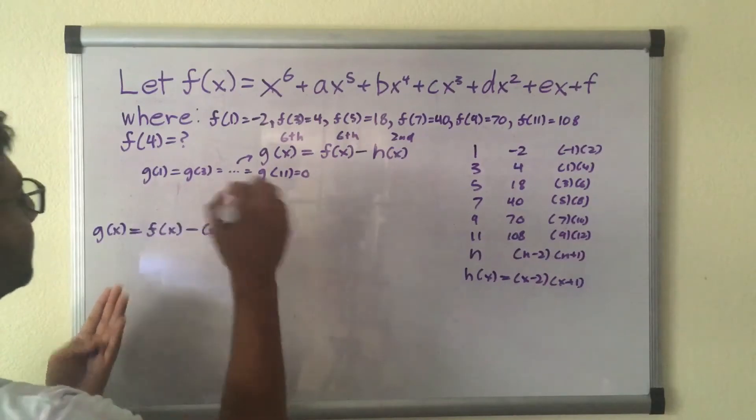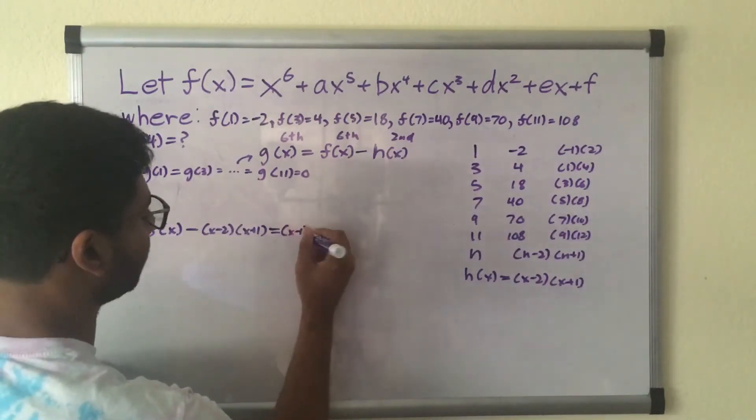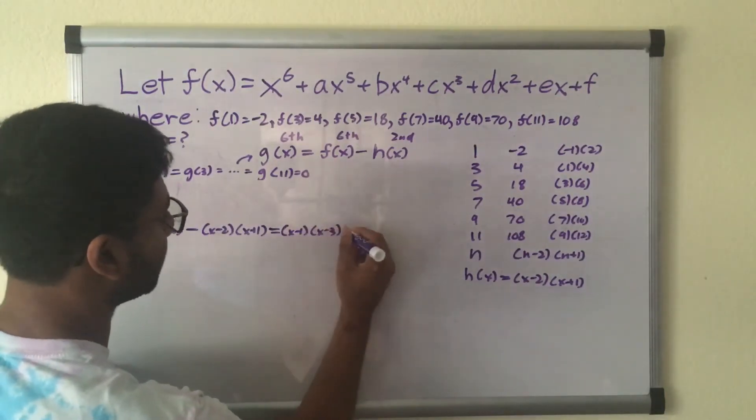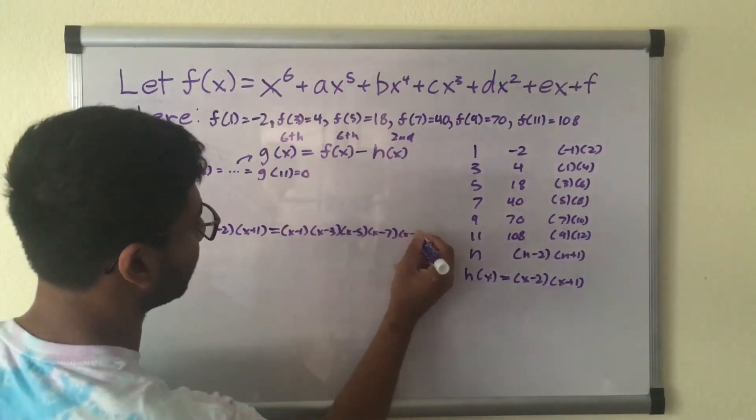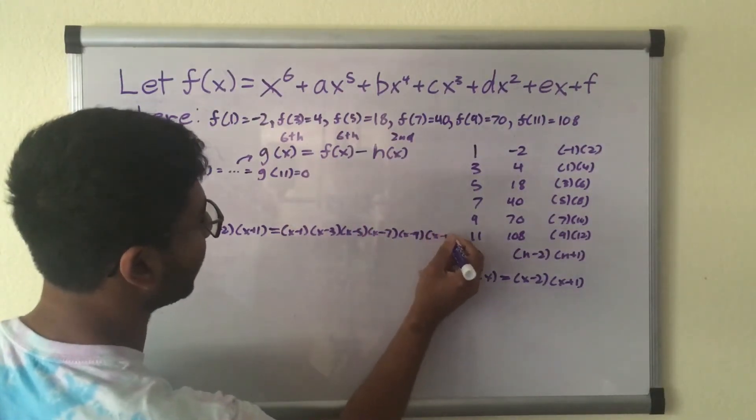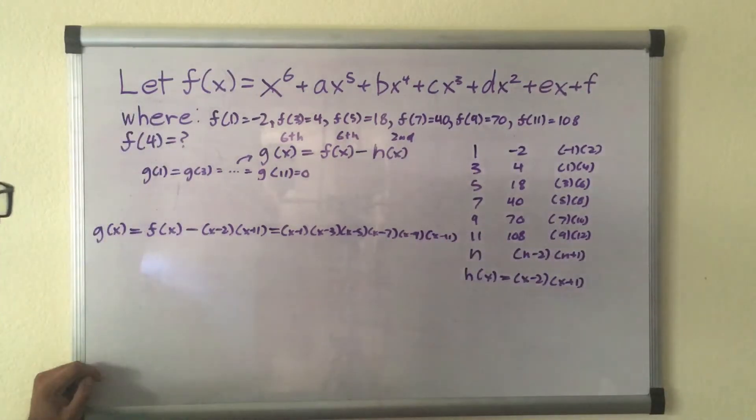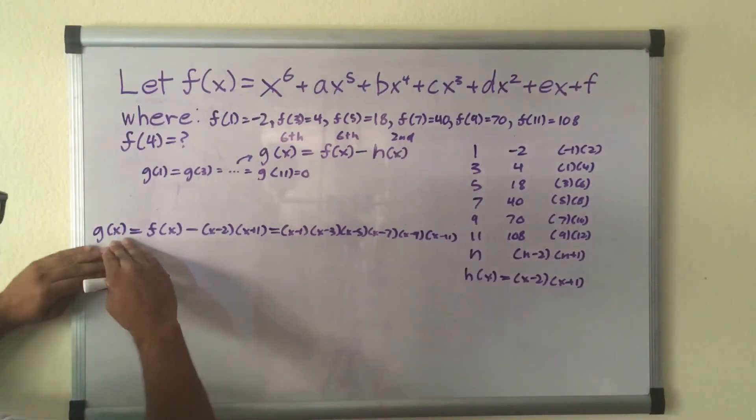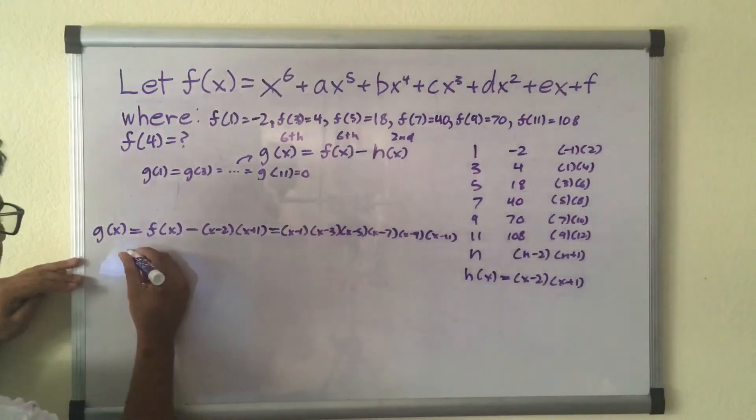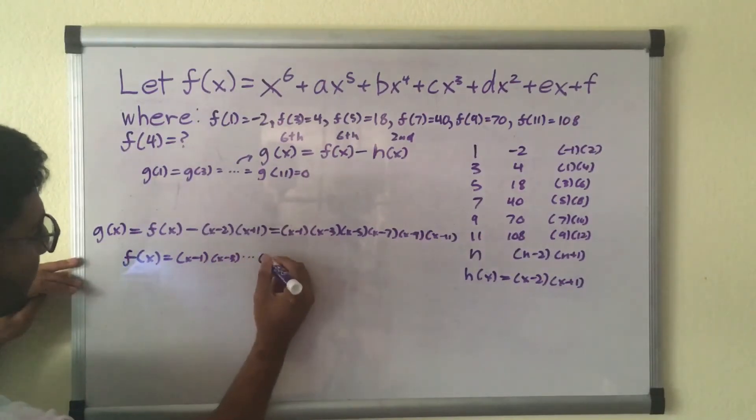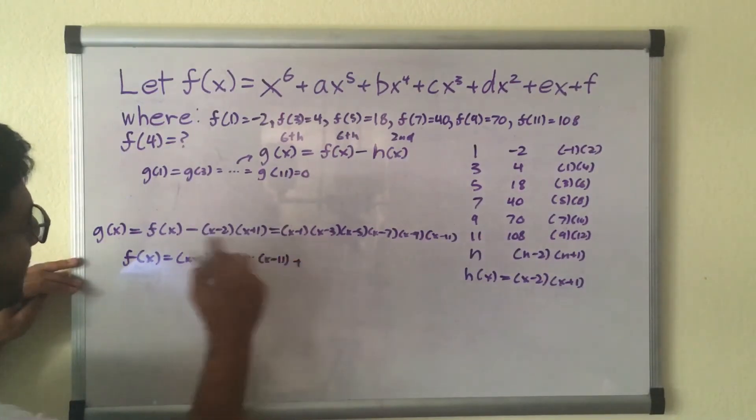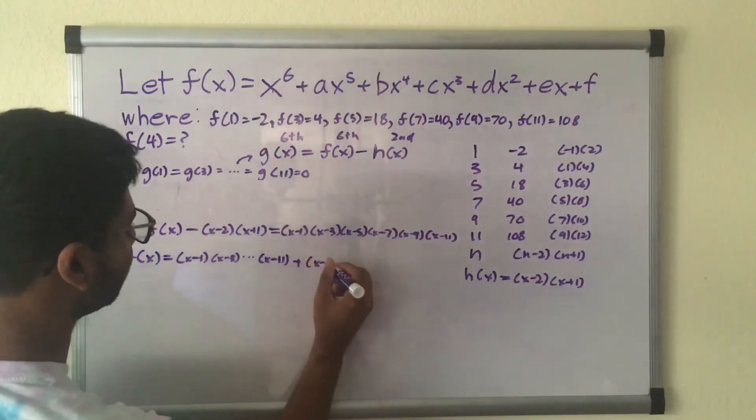which would be these roots. So that's x minus 1, x minus 3, x minus 5, x minus 7, x minus 9, all the way to x minus 11. So we can ignore this g of x now and we can isolate f of x. f of x is equal to x minus 1 times x minus 3 all the way to x minus 11 plus this x minus 2 times x plus 1.